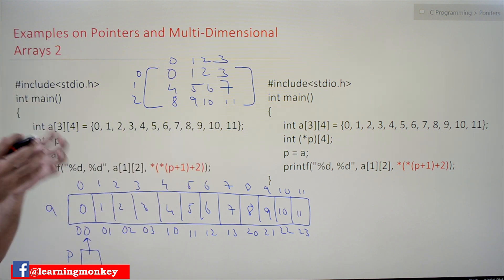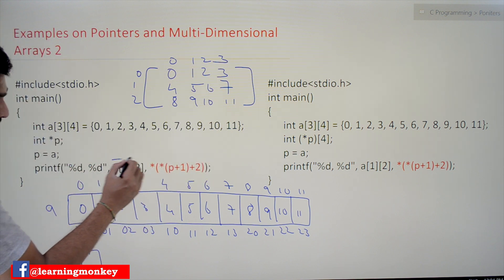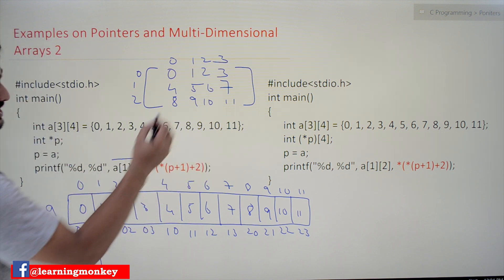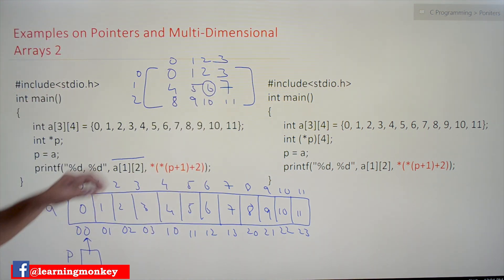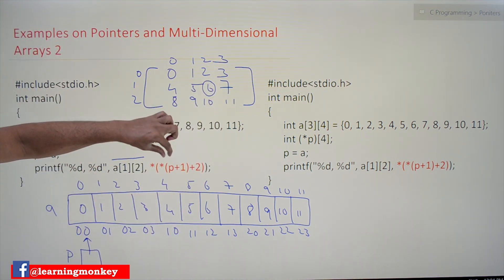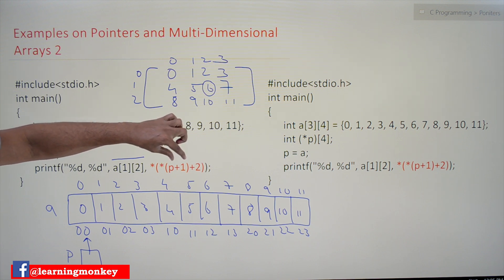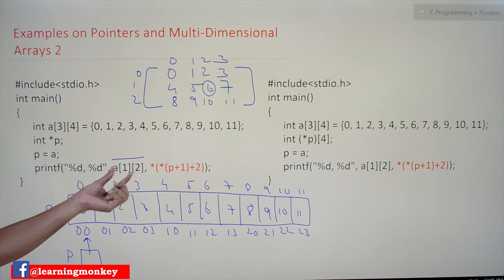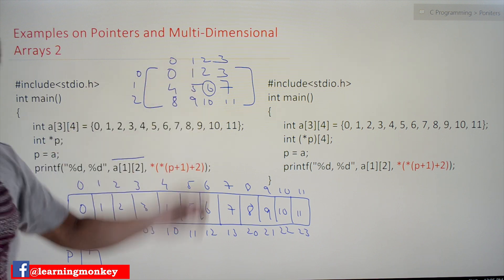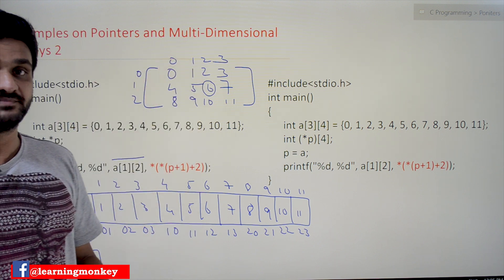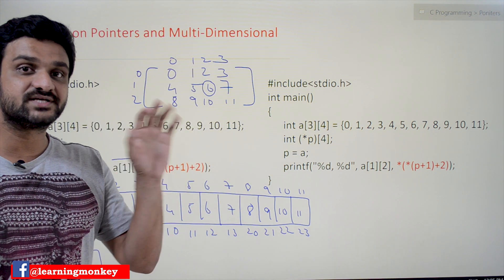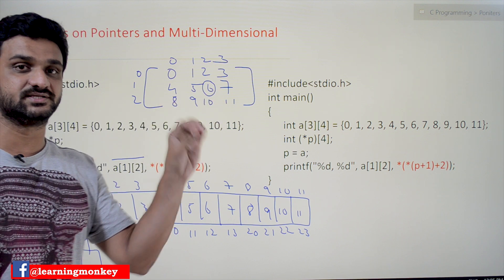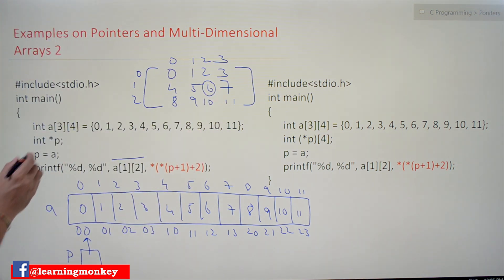We are trying to find the element a[1][2]. That is the element we are trying to find. If we use this expression with P+1, are we going to get the same value of a[1][2] as we saw in our previous example? No — it is going to generate an error. Let's understand why we are going to get that error.